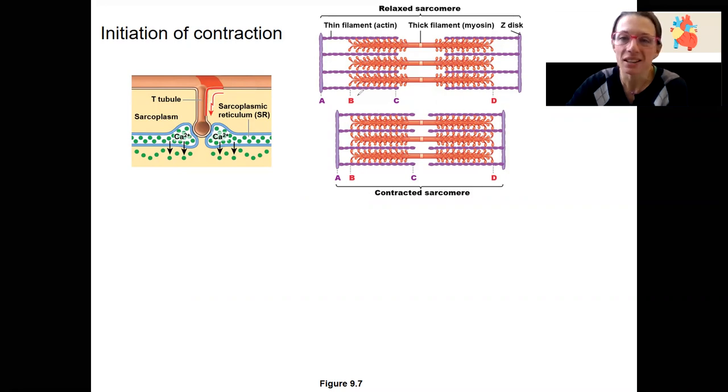So we need to be able to have our cardiac muscle contract by shortening the distance between these Z-discs, and that's done by cross-bridge cycling.